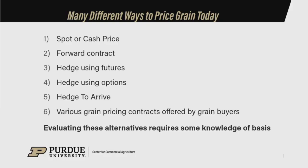Maybe up a rung from there: hedging with futures and options, allowing us to use the board of trade to protect at least that futures price component. The hedge-to-arrive contract — again, we're using the board of trade futures, but the merchandiser is taking that position on behalf of the farmer. And there's a growing number of specialized or customized contracts that merchandisers are offering — seems like there's a new one every week almost.